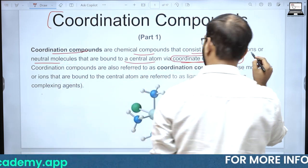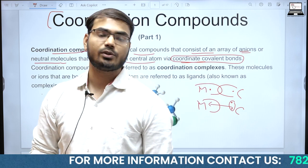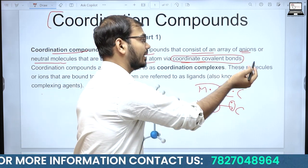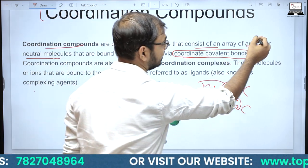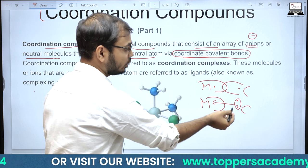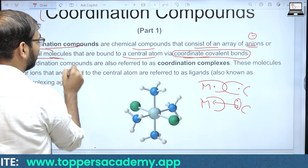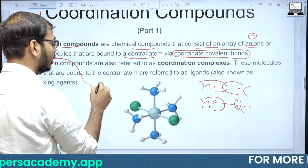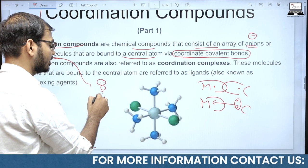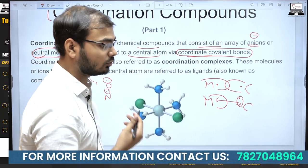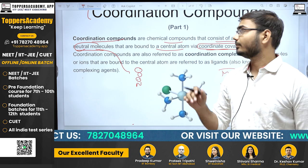Anions और neutral molecules इसलिए क्योंकि इन दोनों के पास excessive electrons होने चाहिए। Anions हमेशा negative charge carry करते हैं जो electron donation के लिए ज़रूरी है। Neutral molecules जैसे oxygen और nitrogen के पास lone pairs होने चाहिए। जब ये covalent bond से किसी central atom से bound हो, तब हम उसे coordination compounds कहते हैं।